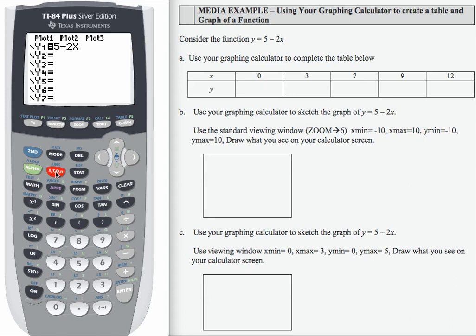To access our table, we're going to press the second button and then the table, but I first want to make sure that my table is set up properly, so I'm going to press second and then table set. That's going to show me the starting value for the table is zero, my table is incrementing by one.